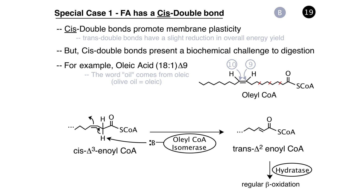The isomerase puts the double bond into trans configuration, which is now amenable to further hydration and beta-oxidation. Overall, the isomerase has taken the cis double bond and repositioned it to make it a trans double bond that is now able to undergo further oxidation by the classical beta-oxidation pathway.